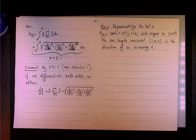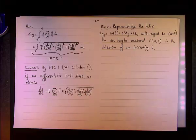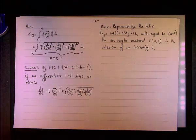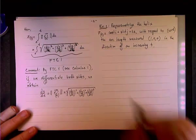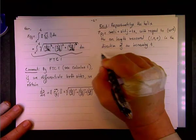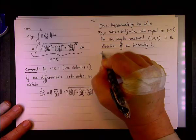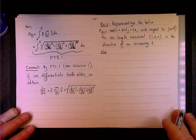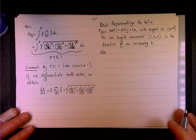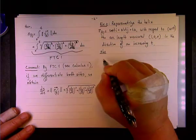Which is somewhat redundant because when we define the arc length function, we define it as the integral in the direction of increasing t. So let's see if we can make sense out of this example, because it's a little bit weird.